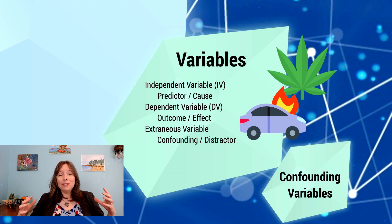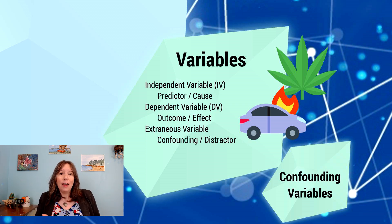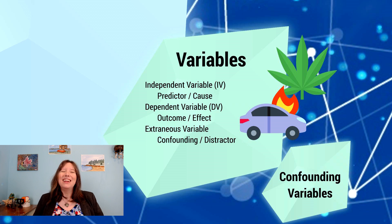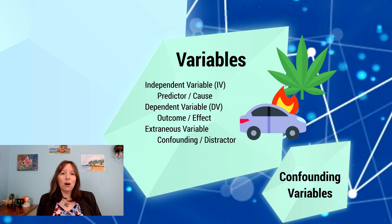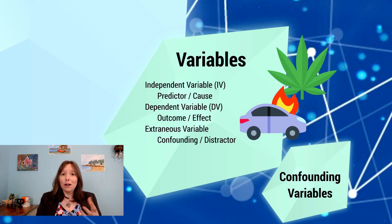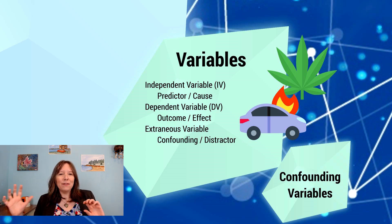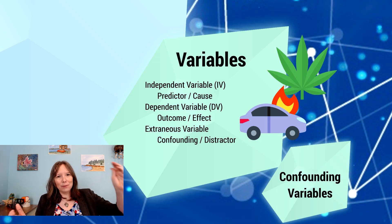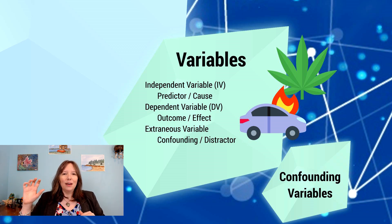In terms of variables, once you've decided how you're going to measure things, it's important to understand what you're actually testing. All psychological studies should have at least two variables: the independent and the dependent variable. The independent variable, or IV, is also called the predictor variable or the cause. The dependent variable, or DV, is also called the outcome or the effect. The independent variable should cause the dependent variable — the dependent variable depends on the independent variable.